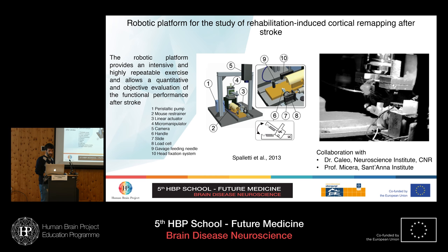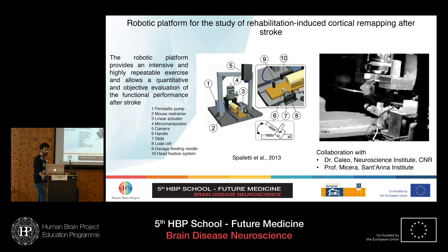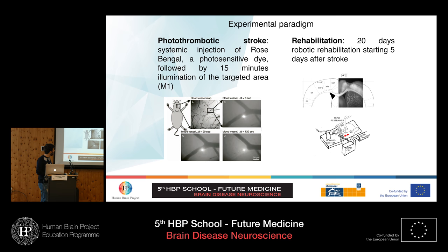In our lab, we developed in collaboration with Dr. Caleo and Professor Micera, both from Pisa, a robotic platform for studying rehabilitation-induced remapping after stroke. In this video, the mouse's contralateral forelimb is attached to a handle. A linear actuator stretches the forelimb forward, and the animal only returns to the ground position. It is a very simple task, but sufficient to study motor rehabilitation. The animal learns this task very fast.